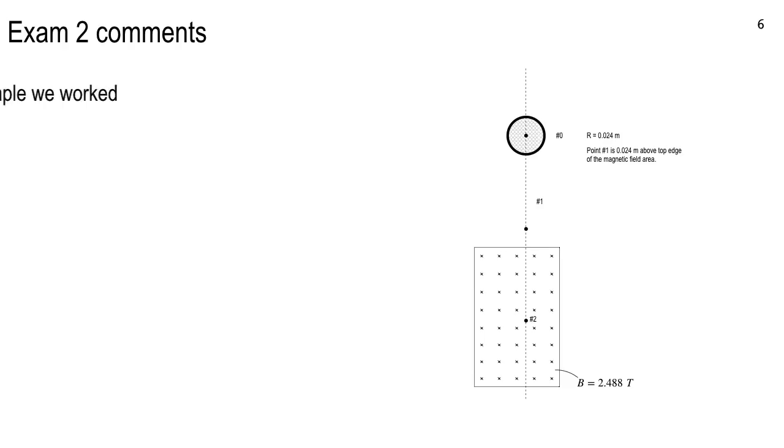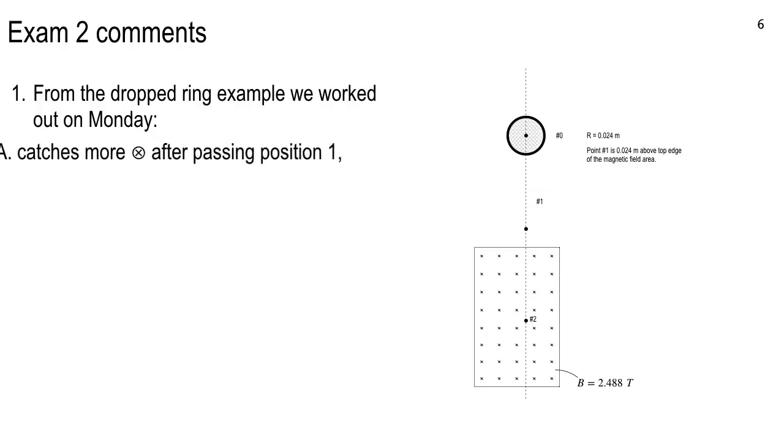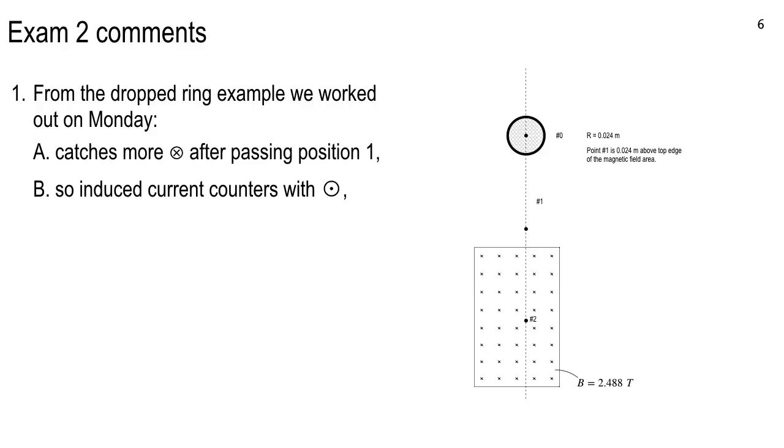All right, exam two comments. We had this one, the dropped ring example, and we actually worked on it on Monday. And I used the same basic situation, except I gave you positions and distances a little bit differently. And this one, the induction question, after it passes position one, which is right here, he starts to catch much more inward rings. So the induced current wants to produce outward, and therefore the induced current is counterclockwise. Now, I haven't seen what your guys' performance on that is, but I'm going to look at it.